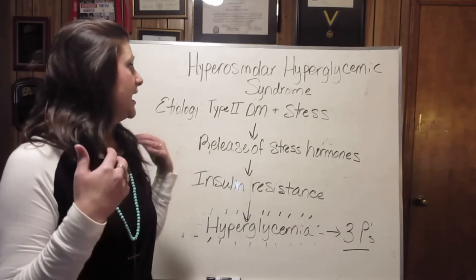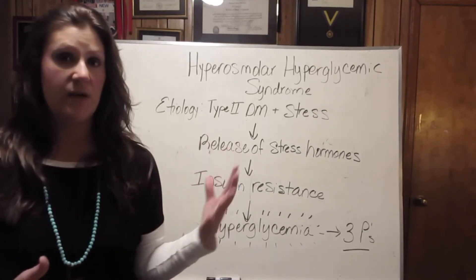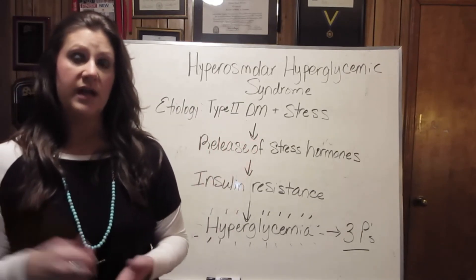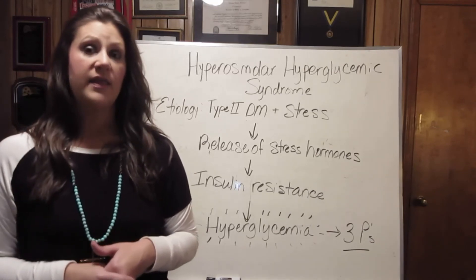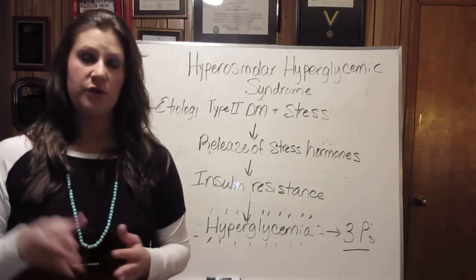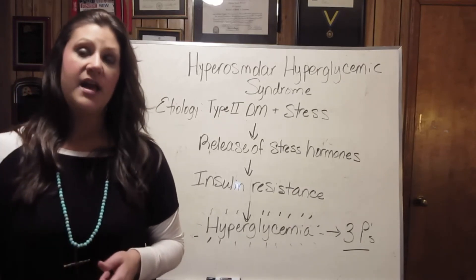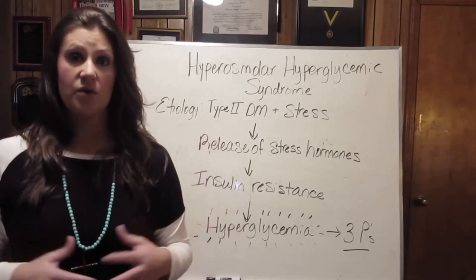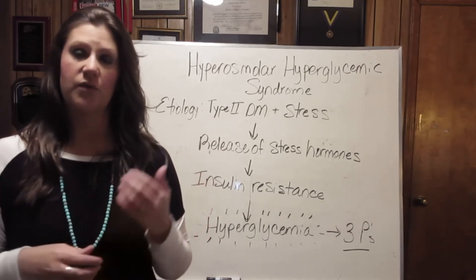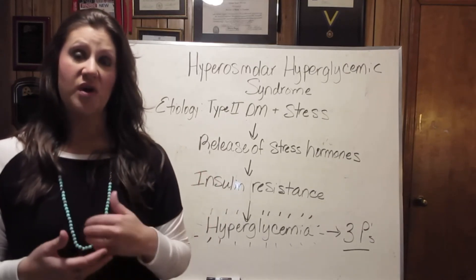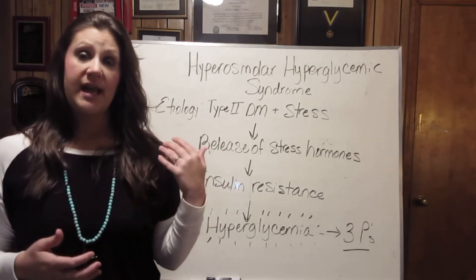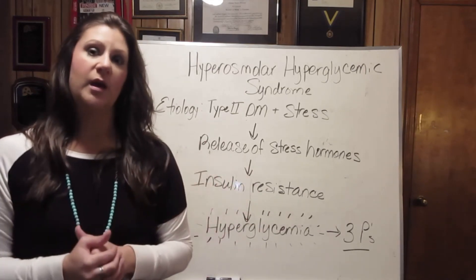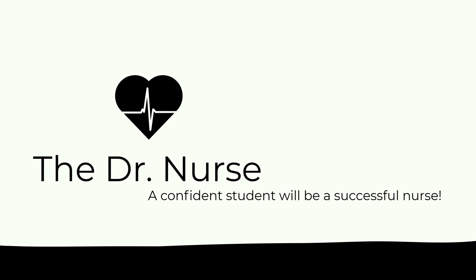And that is HHS, or HHNK, whatever your program calls it, in a nutshell. I hope this has helped you. Look out for the endocrine Pathopedia coming out very soon. Thanks so much for watching. If you're watching from YouTube, hit the subscribe button. Head over to TheDoctorNurse.com for tons of other videos and resources. The Pathopedia eBooks for CV, Respiratory, GI, and GU are now out and available to purchase. Thank you for being a part of the DrNurse community.